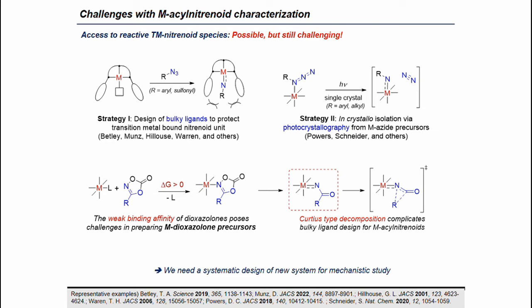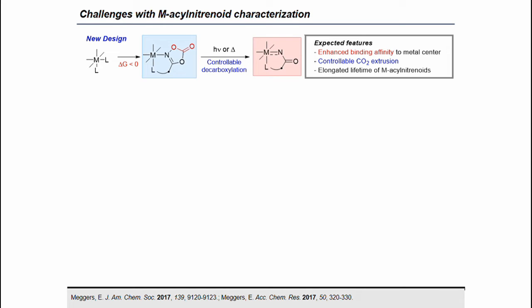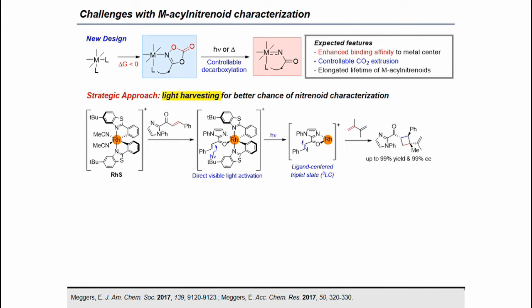Even if the proposed metal nitrinoid species is formed, we still need to block various decomposition pathways such as Curtius-type rearrangement. Therefore, to achieve the goal of characterizing elusive transition metal acyl nitrinoid species, we need to strategically design a new system. To overcome these key challenges, we came up with the idea of designing a bidentate dioxazolone ligand system that contains the nitrinoid precursor, expecting to increase binding affinity to the metal center. Inspired by the light-harvesting octahedral rhodium catalyst system developed by Meggers and co-workers, we believed that nitrinoid formation triggered by photoirradiation could offer a better chance.